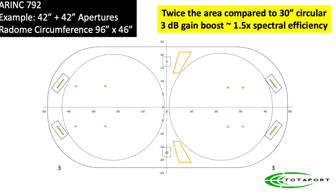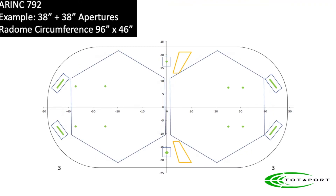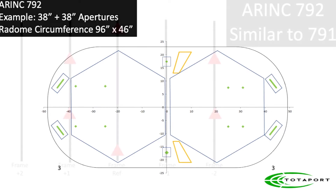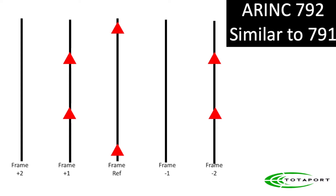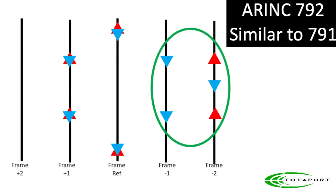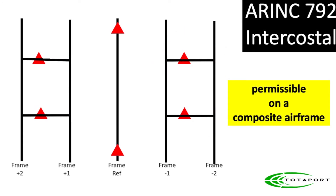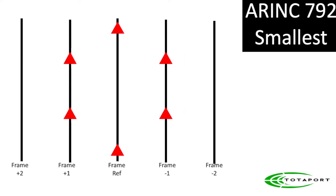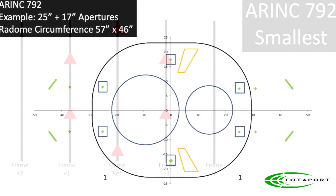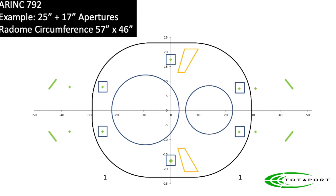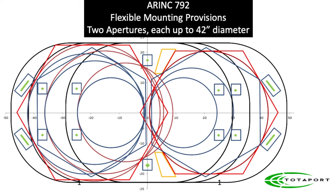These large apertures can provide almost a 50% boost in spectral efficiency compared to a 30-inch aperture. ARINC 792 also supports non-circular apertures. Comparing an ARINC 791 installation, you can see the 791 lug locations in blue versus 792 in red — the three aft 791 positions become two in ARINC 792, vacating space for the second aperture and improving load distribution. For the first time, ARINC 792 allows for intercostal attachments. The most compact arrangement supports a 25-inch and a 17-inch aperture.